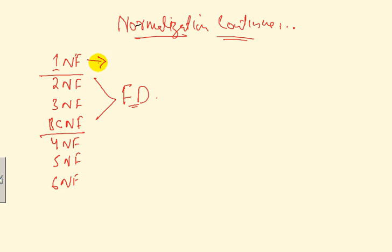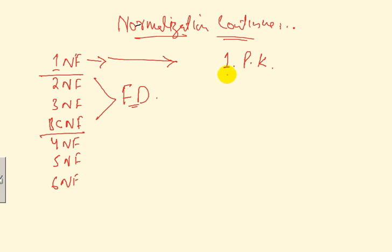1NF tells us that our data should be in tabular form. In 1NF: we should have a primary key, no duplicate attributes, attributes should have a domain, and most importantly, attributes should be atomic. If attributes are not atomic, you will have a table inside a table.